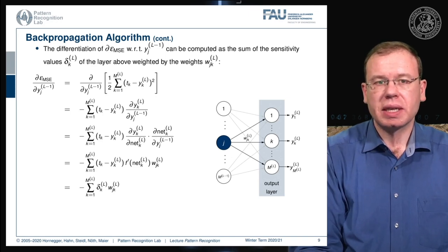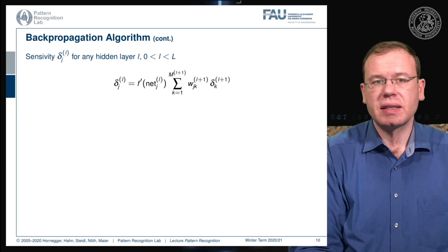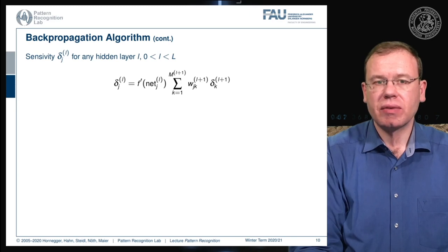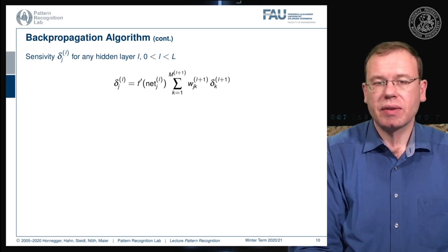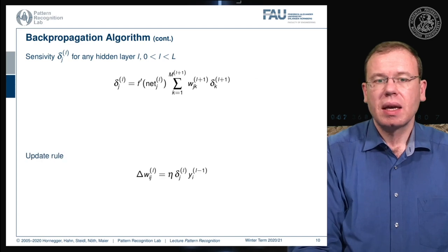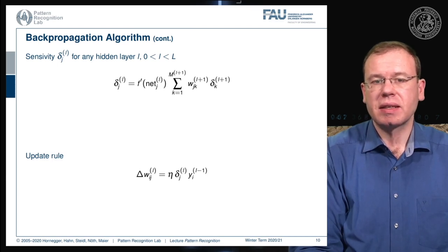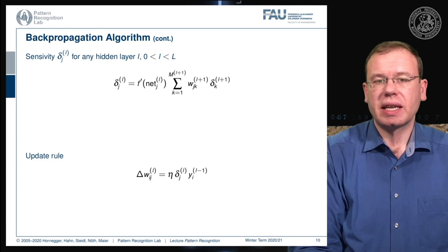Using this term, we compute the final gradient update. The sensitivity in any layer l is the derivative of the activation function of the net, times the sum over all weights multiplied with the sensitivities of the next layer. The gradient update for the weights is then eta times the sensitivity of the layer times the input from the previous layer — a recursive formulation to compute the updates.